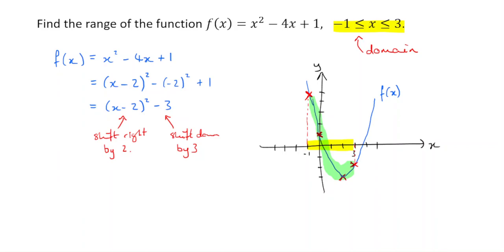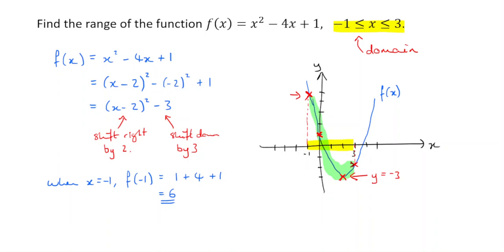So if that's the case, what are the possible output values? What are the potential y values? We need to find the lowest value of y and the highest value of y. The lowest value is at the minimum point, where y equals negative 3. The highest value is at x = -1. Let's calculate that: when x equals negative 1, the function is negative 1 squared — which is 1 — minus 4 times negative 1 — which is plus 4 — plus 1, and that equals 6. So that value there is y equals 6.